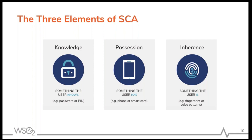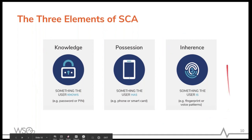Authentication mechanisms are divided into three elements of SCA. First, knowledge—something the user knows, like a password or PIN. Second, possession—something the user has, such as a smart device like a mobile phone or a separate authentication device. Third, inherence—something the user is, such as fingerprint identification, voice patterns, or keystroke dynamics. There are many factors that can be categorized under inherence. How we pair these elements matters: you cannot pair two knowledge elements and call it SCA—that is not correct.